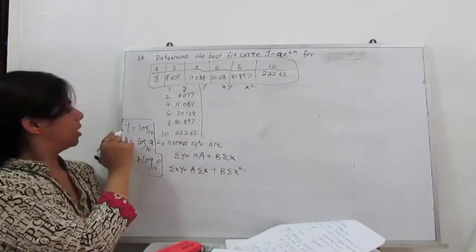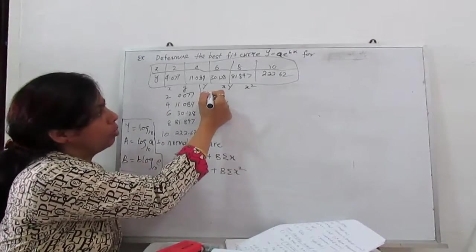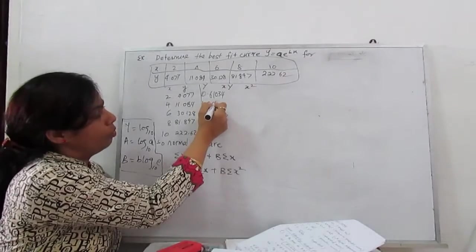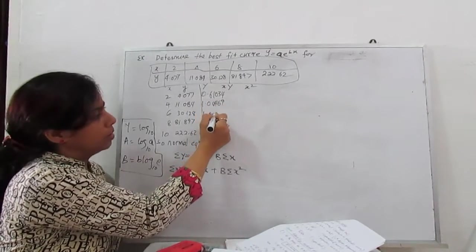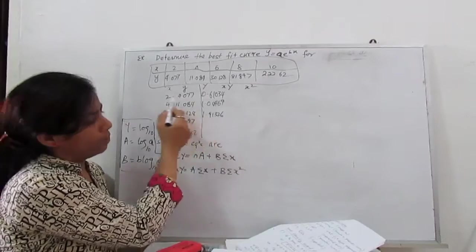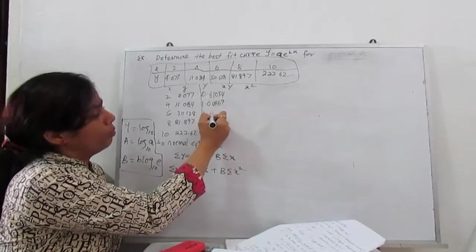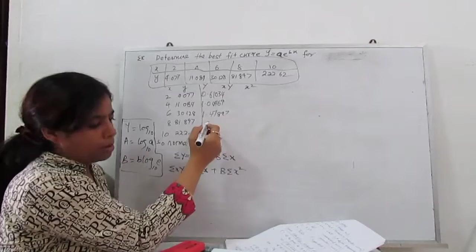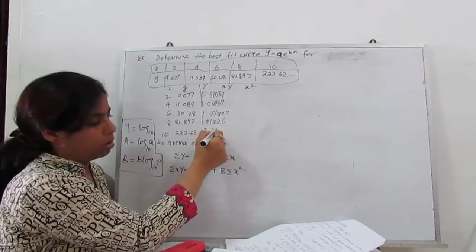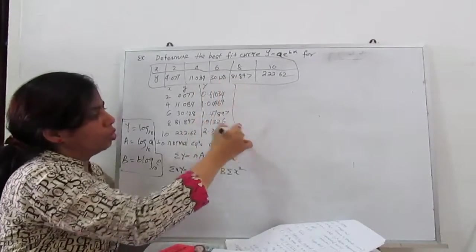Now what is capital Y? Capital Y is log base 10 of y. So for this we can find with the calculator 0.61034, this is 1.04469, then 1.47897, 1.91326, 2.347564. So this is our Y.